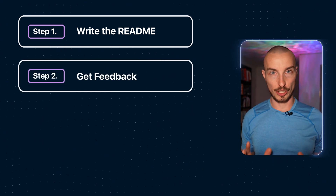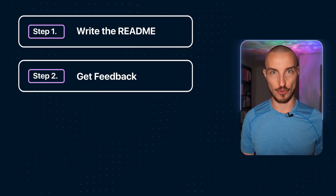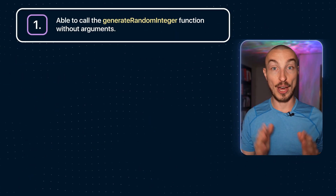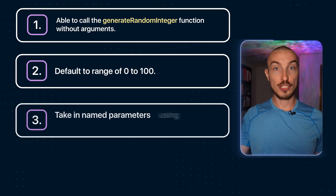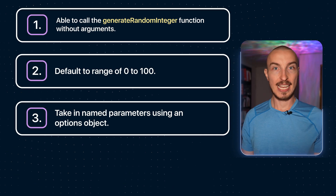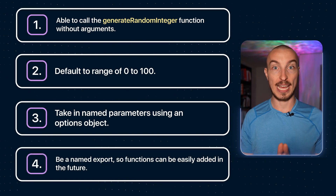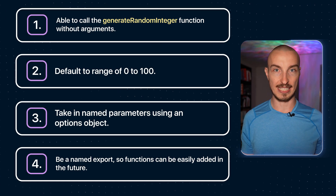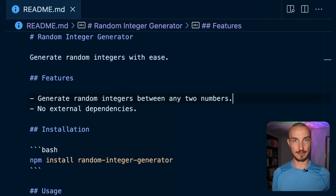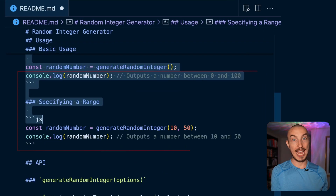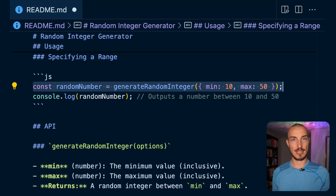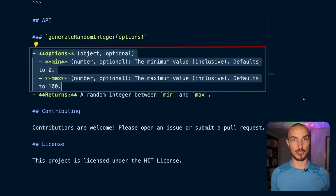Now let's say you take your README to your co-workers so they can critique it. Your co-workers point out a few ways to improve your random number generator. First, you should be able to call it without arguments. Second, it should default to a range from 0 to 100. Third, it should take named arguments via an options object. And lastly, it should be a named export so that if you want to add future functions to your package you can do so easily. You agree with your co-workers and update your README. You add a feature to your features section, you split the usage section into basic usage and when you specify a range, and you update your API reference to include the new features. You show your updated README to your co-workers and they are happy with it.